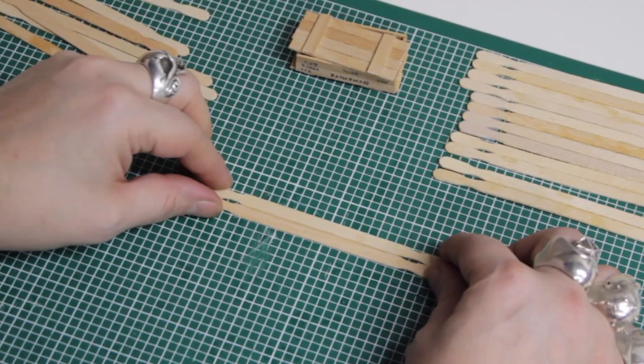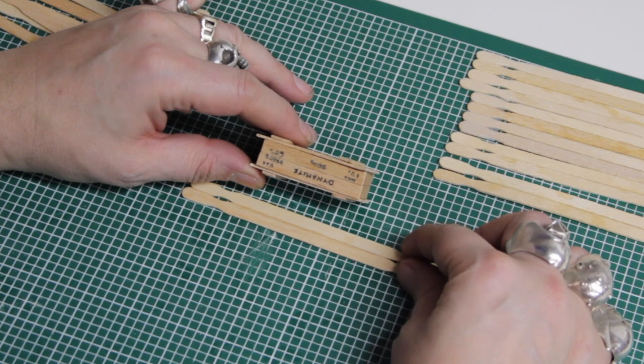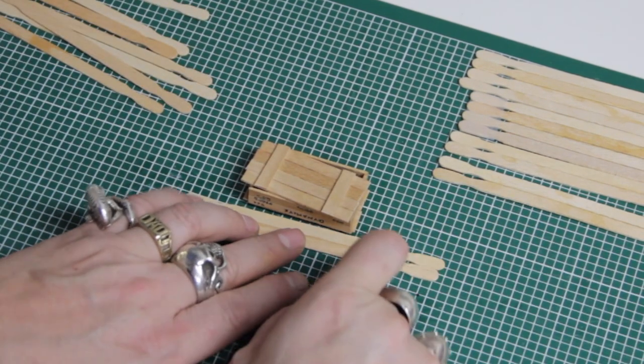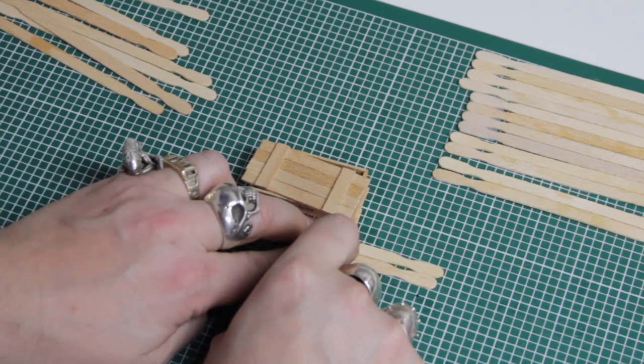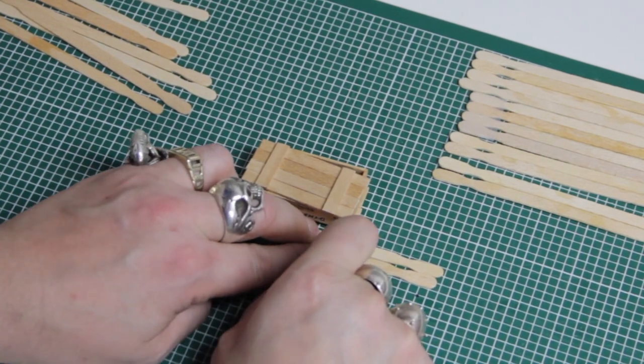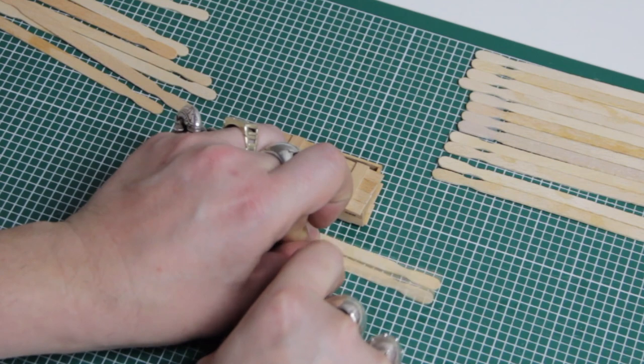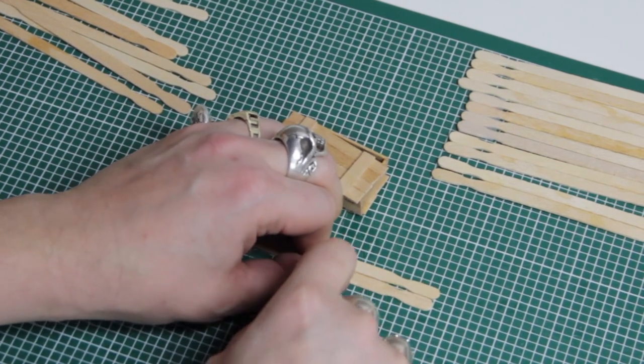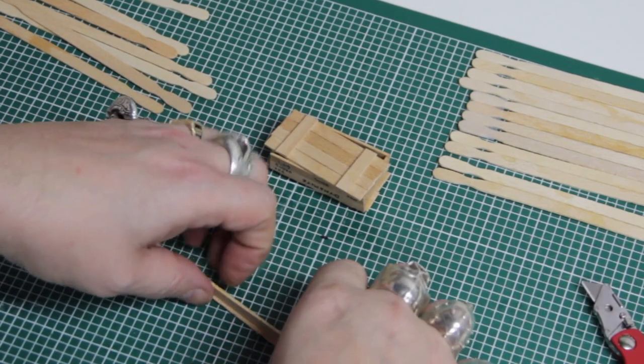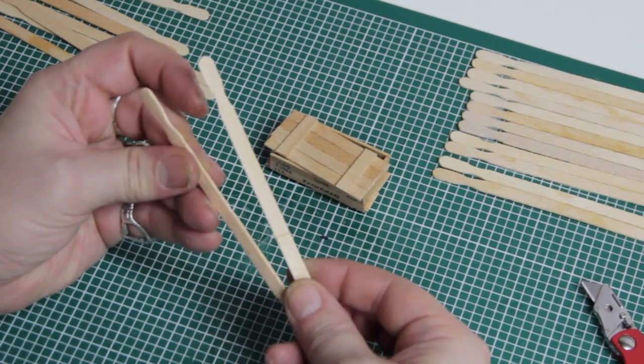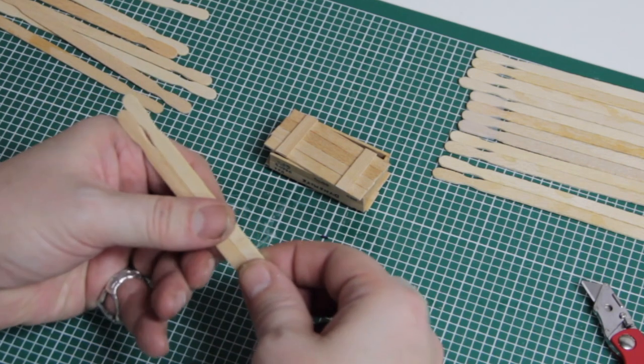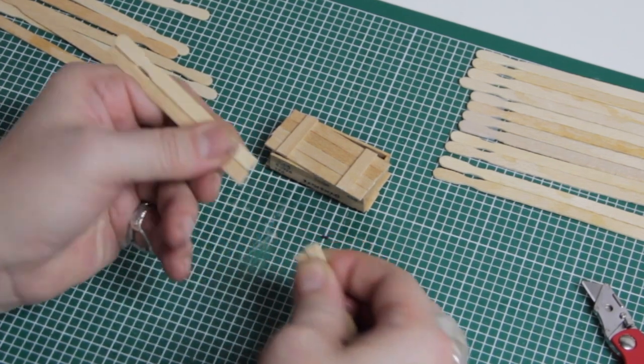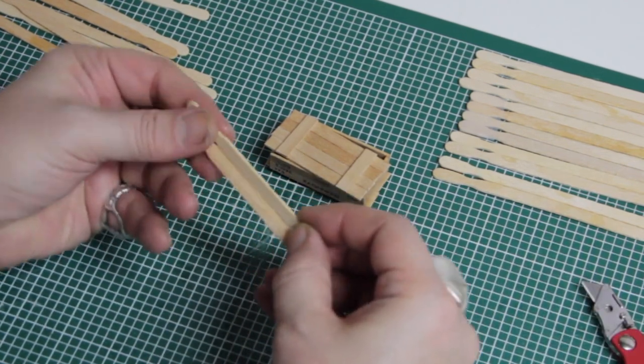Okay, so we're going to start cutting these now that they're stuck together. Again, you can be rough and ready with the sizes. We're not going for accuracy as all the crates are around about the same size. As you can see there, that one's falling apart from the glue, but we can still break. If you cut halfway through, you can snap it off and you get a nice rough edge on the side.